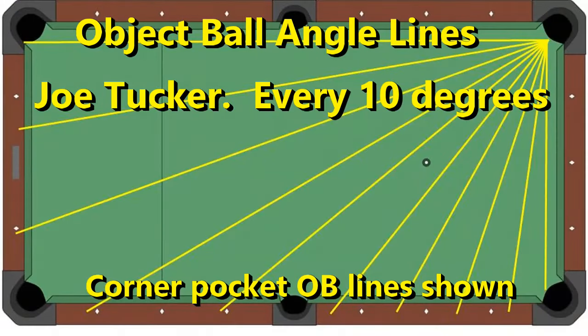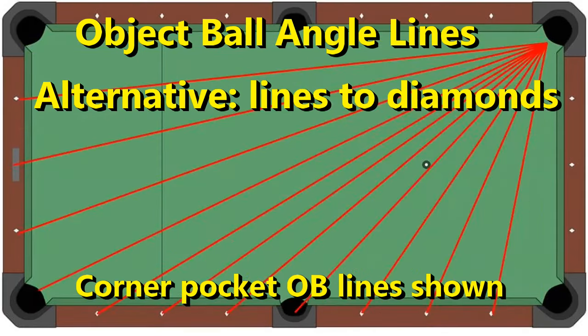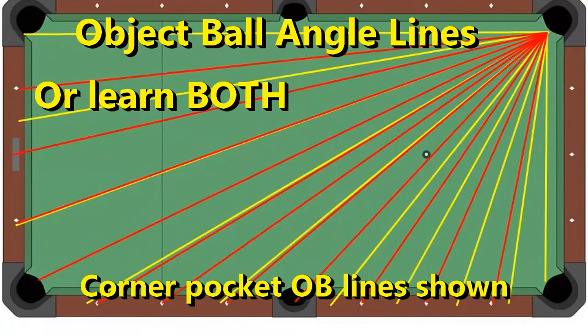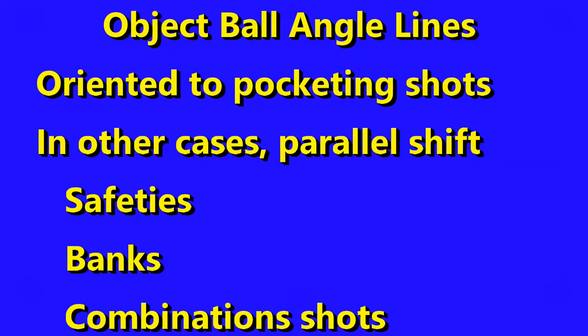The object ball angles are based on lines you memorize from the corner pocket and the side pocket. Joe Tucker introduced this concept with his aiming system. He used even increments of 10 degrees. Alternatively, you could learn the angles to each of the diamonds, or learn both if you really get into it. Note that this is based on wanting to pocket a ball directly. For safeties, combination shots, and banks, you have to parallel shift the shot line to determine the object ball angle. But that's for another time.